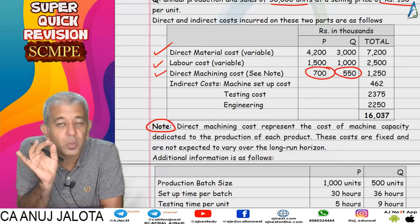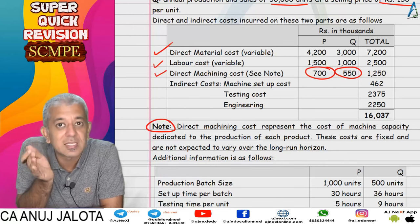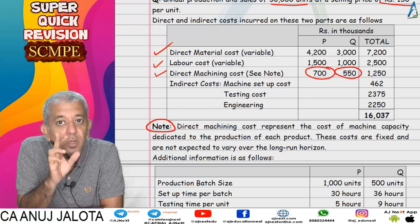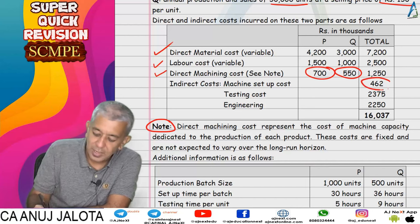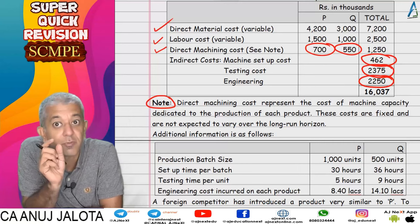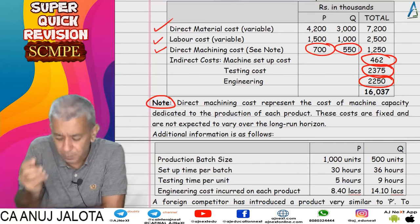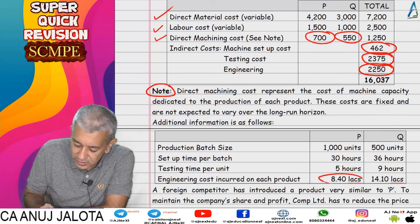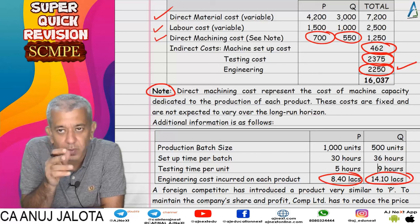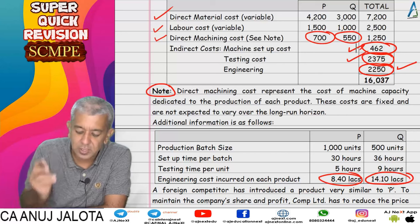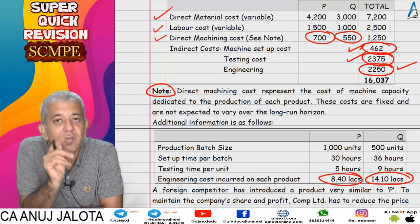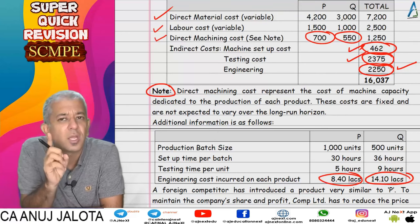There was a note below stating that the machining cost is fixed and will not vary in the long run. So even if each unit takes fewer hours on the machine and the machine becomes idle, this cost will not change because it is fixed. Machine setup cost, testing cost, and engineering cost were also given. For engineering cost, the breakup was provided in the question itself — 22.5 lakhs broken into 8.4 lakhs and 14.1 lakhs.